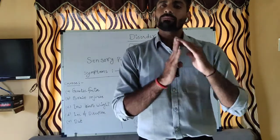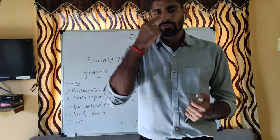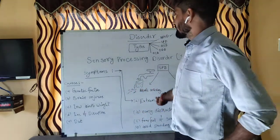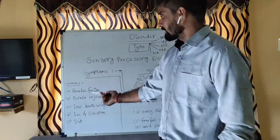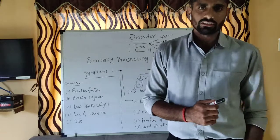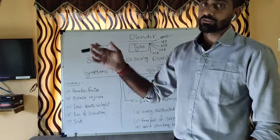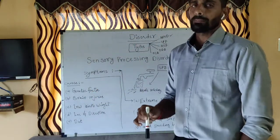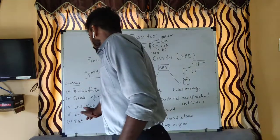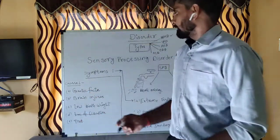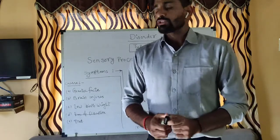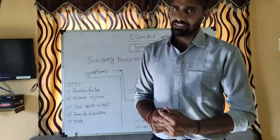One thing to remember: in our body, our senses are 5 — eyes, nose, tongue, ear, and skin. These 5 senses will either work above average or below average. Now let's talk about causes. The first cause is genetic factors — if parents have it, it can transfer to the baby. The second cause is brain injury, which increases the chances of Sensory Processing Disorder. Another cause is low birth weight, and also environmental factors can increase SPD. These are the symptoms and causes of SPD — Sensory Processing Disorder.